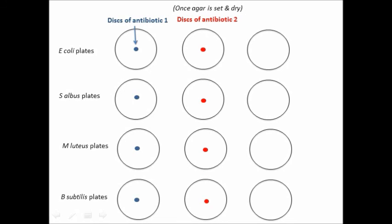Now repeat the process with your second antibiotic disc using your second plate for each species. And then finally, place one disc of your third antibiotic into the third plate for each species. Thus, each species now has three dishes, each one exposed to a different antibiotic.